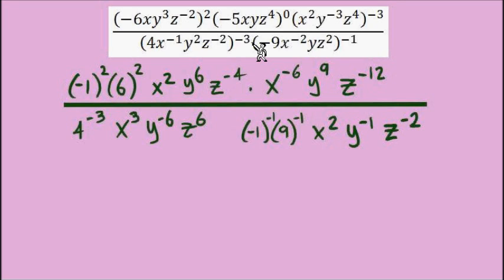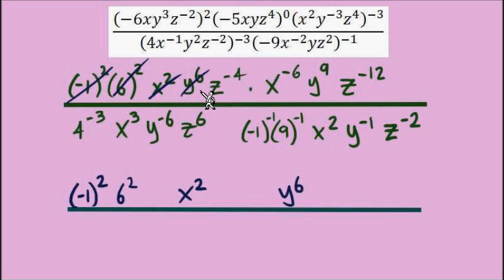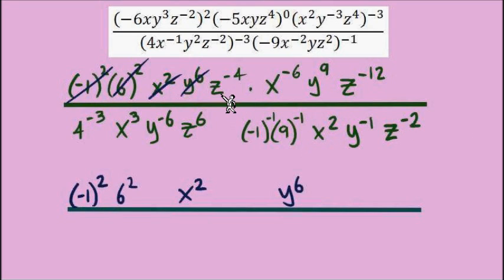Our next move is to begin relocating factors that have negative exponents. I'll start with a new blank fraction and go through one at a time, deciding if each factor stays or needs to be moved. Positive exponents stay where they are — so the 6 squared stays in the numerator, y to the sixth stays in the numerator. When I see z to the negative 4, that becomes z to the positive 4 in the denominator.